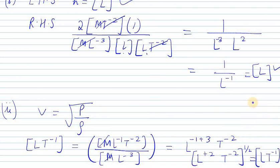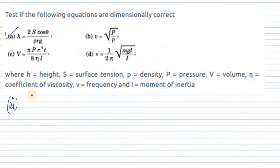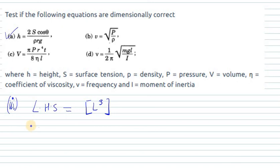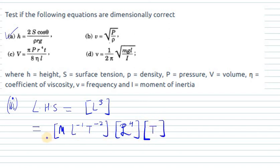Part C: V equals πPR⁴T over 8ηL, where η is the coefficient of viscosity. The left-hand side is volume, so its dimension is L³. For the right-hand side, π and 8 are constants. P is ML⁻¹T⁻², R⁴ gives L⁴, T is time period so dimension T, and L is length. The coefficient of viscosity η is ML⁻¹T⁻¹.